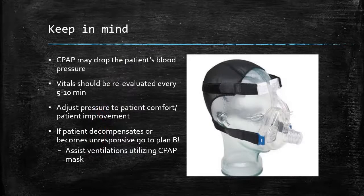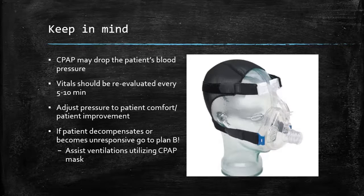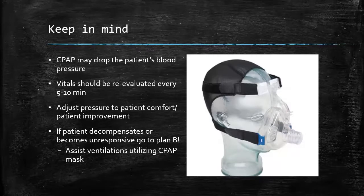Some things to keep in mind when utilizing CPAP: CPAP may drop the patient's blood pressure. When we're increasing the pressure in the chest, we're not allowing that deoxygenated venous blood to come back into the heart as well as it used to. So we may see a drop in blood pressure. Because of that, we need to reevaluate vital signs every five to ten minutes to make sure blood pressure is where it needs to be. If at any point we apply CPAP and the blood pressure drops below 90, they are no longer a candidate for CPAP and we need to think of something else. Adjust pressure to patient comfort and patient improvement — constant reassurance and communication with the patient to make sure we're still going down the right path.